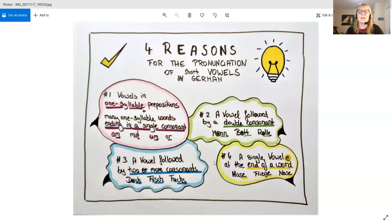So there are four reasons for the pronunciation of short vowels in German. Number one: vowels in one syllable prepositions. We have here am, mit und um. Am, mit, um. And many one syllable words ending in a single consonant. For example, er. So am, mit, um, er.